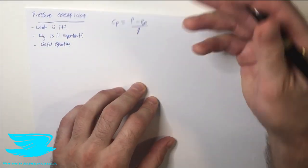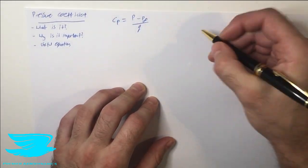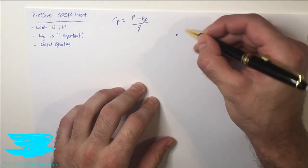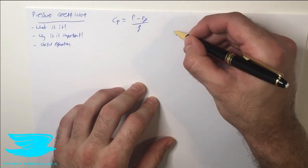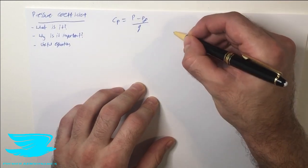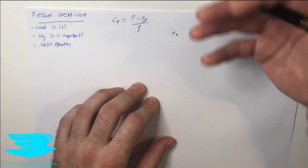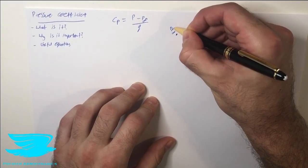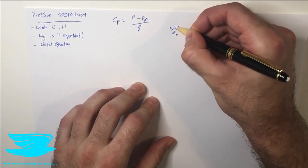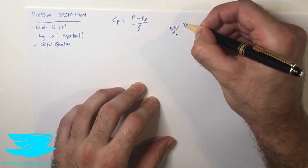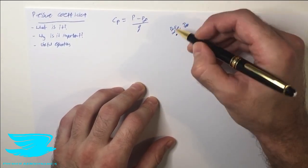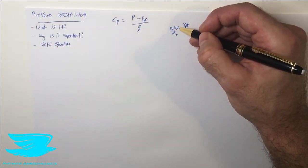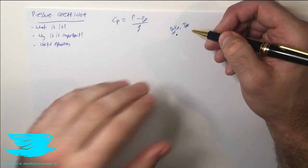So what are these terms? First of all, let's talk about p and p infinity. So let's say we have a flow, and upstream we have some point — this is the infinity position, the free stream point — and we have p infinity here, v infinity, and rho infinity. So the pressure at the free stream point, the velocity there, and the density.